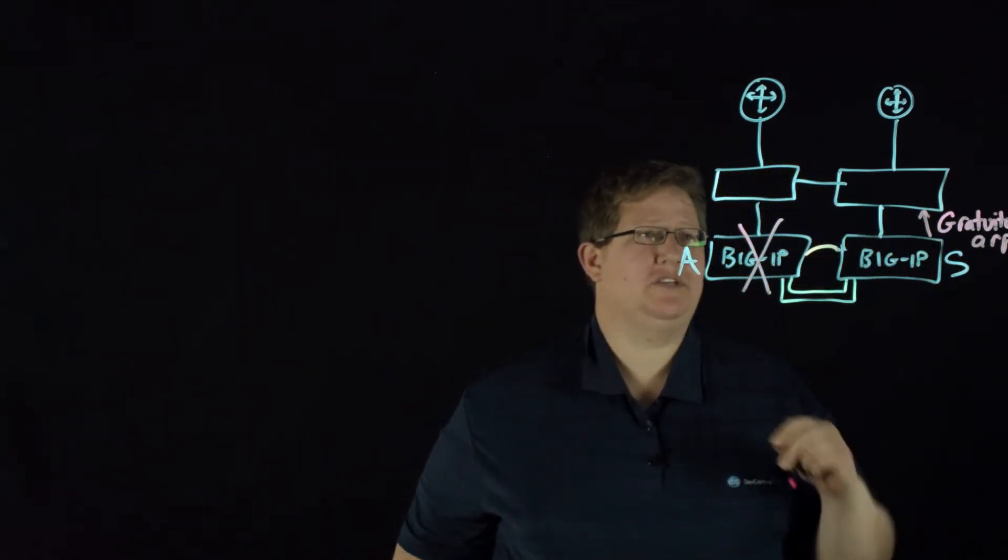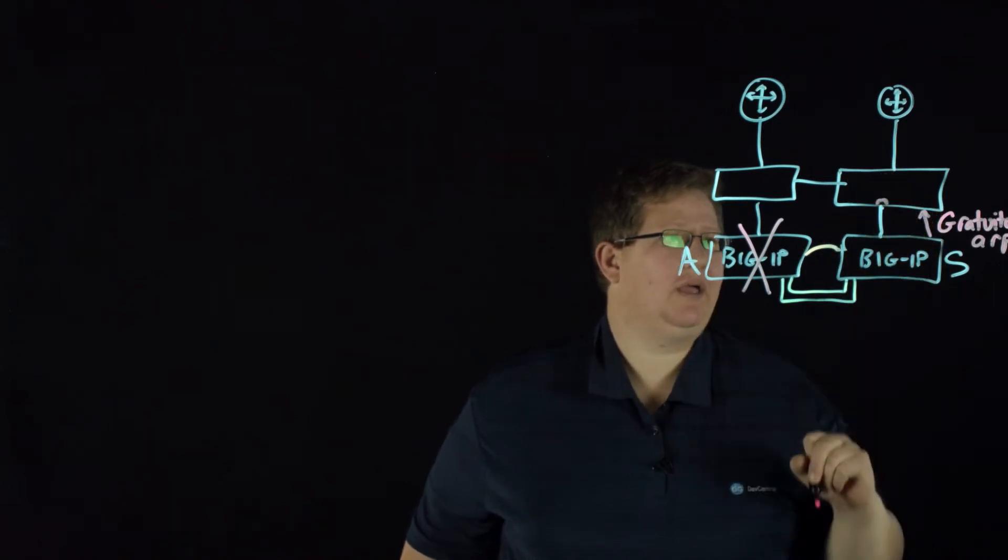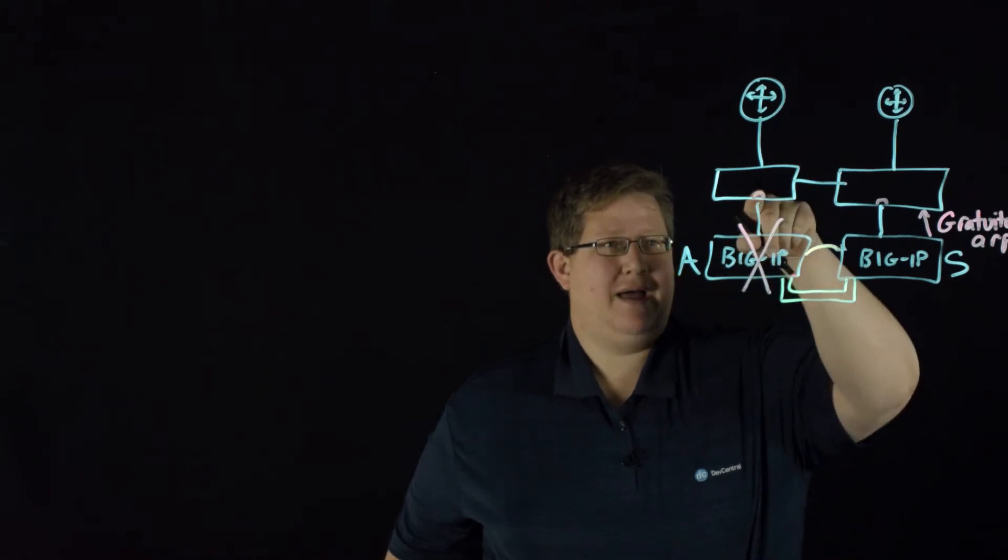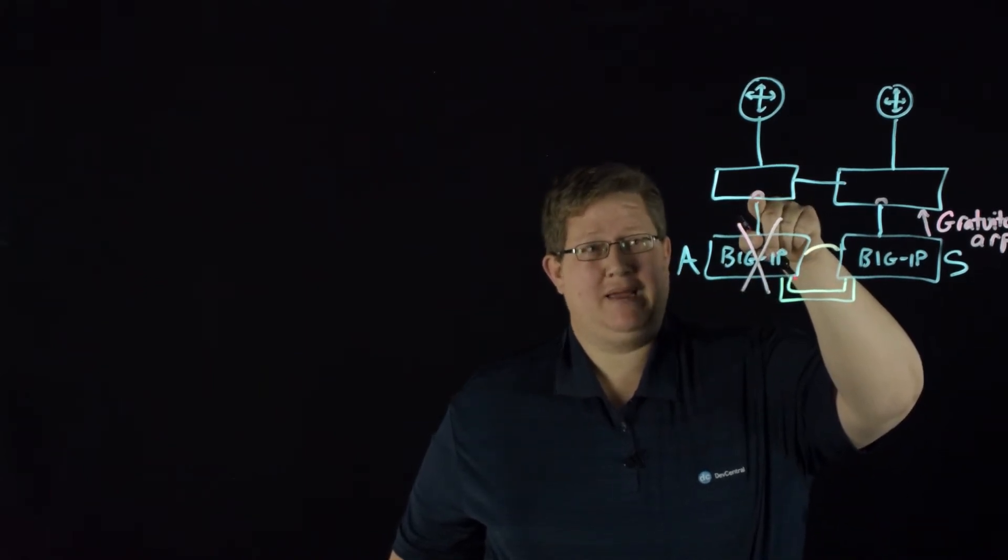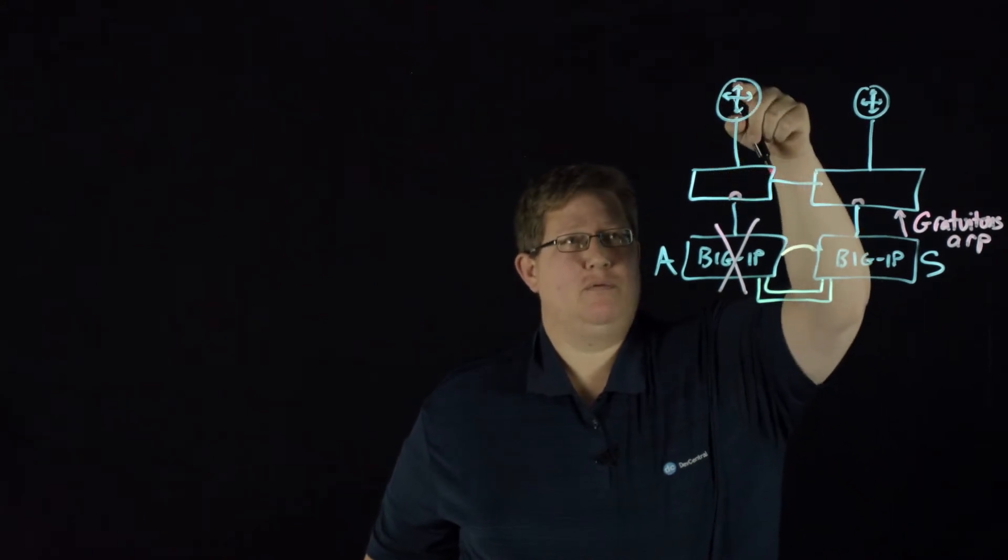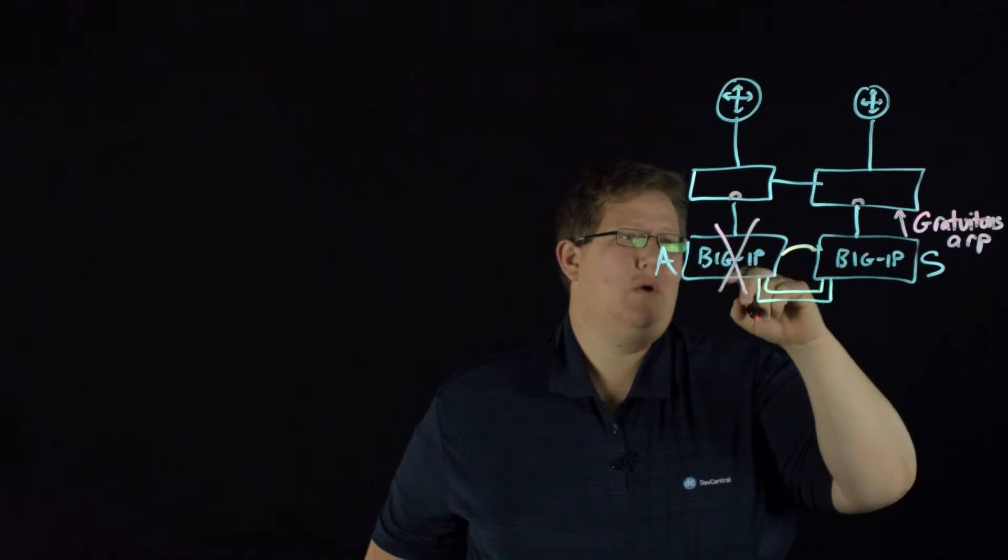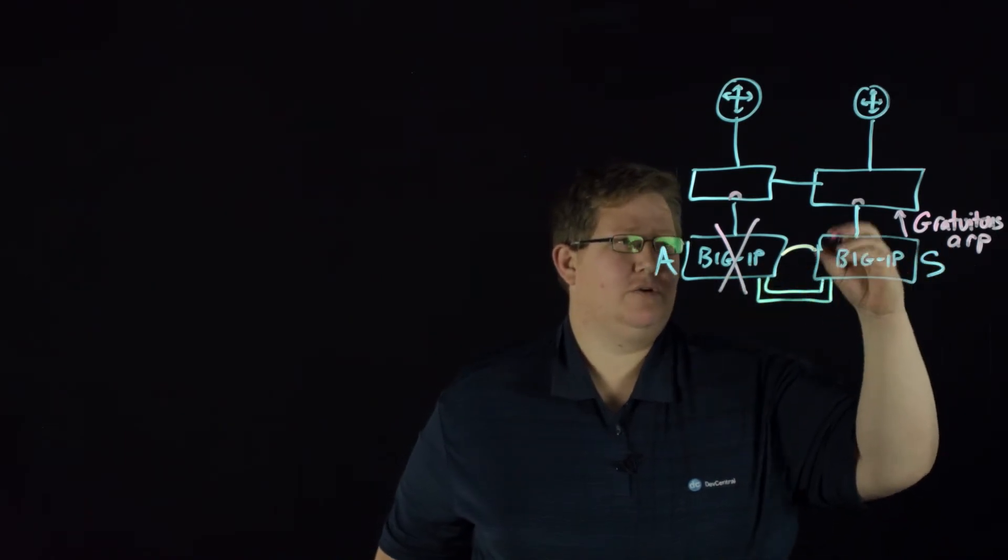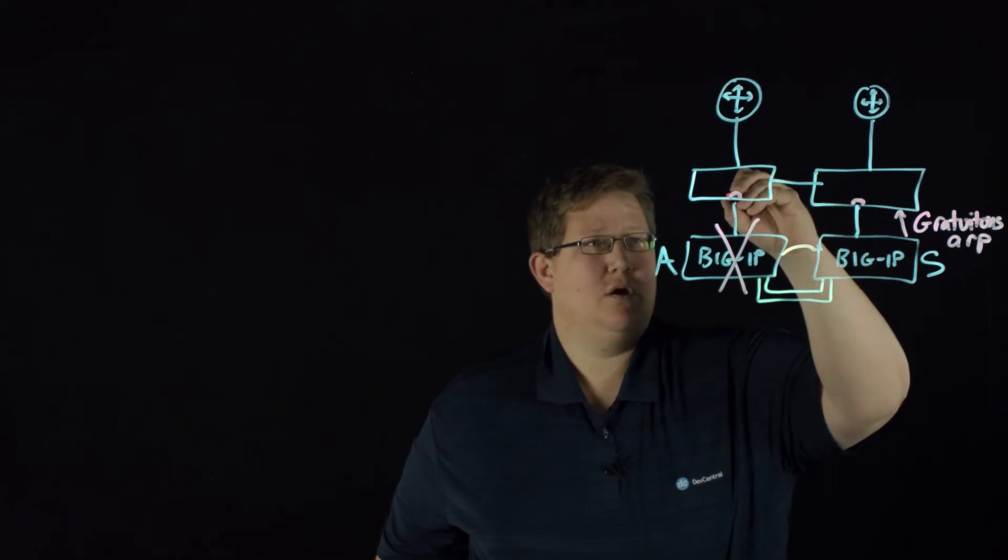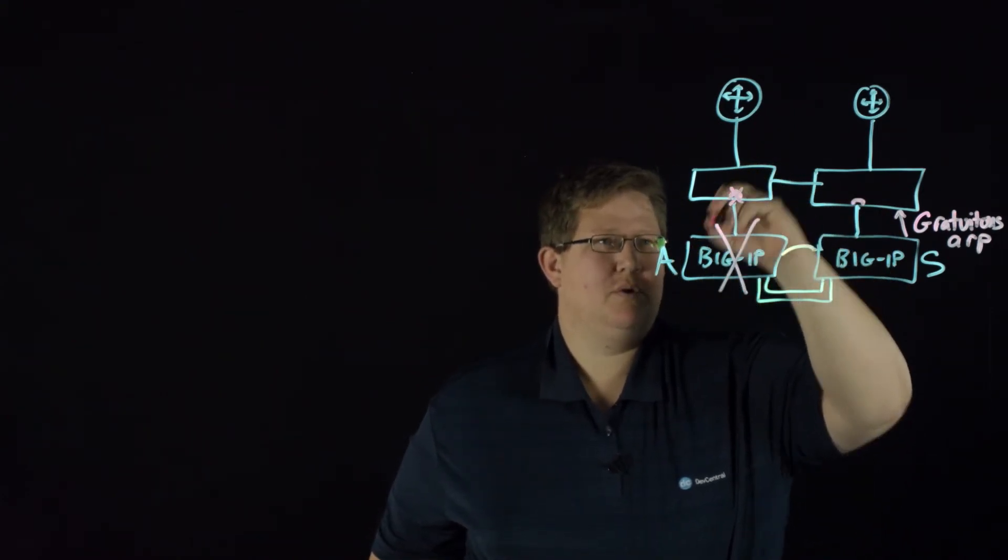So in the MAC address tables of these switches, originally the switch had that belonging on the active one. He had that MAC address known to be here, so the MAC address table will point to this port for that MAC address. When the BIG-IP sends a gratuitous ARP, the switch here updates his table and notifies, and then this is pulled out of the table.